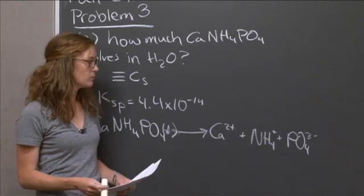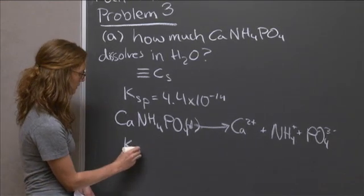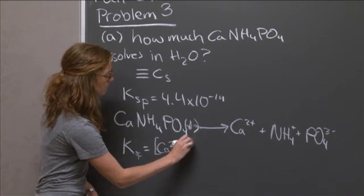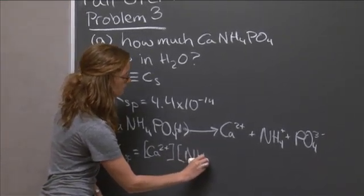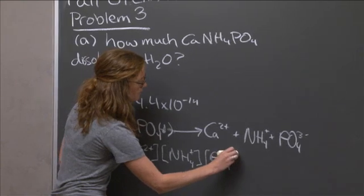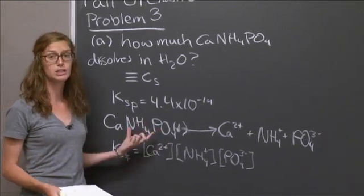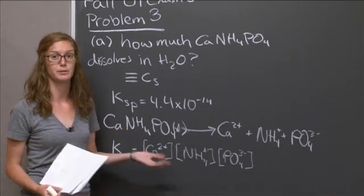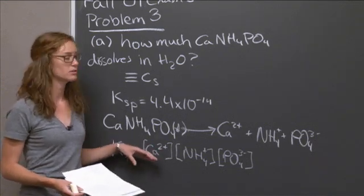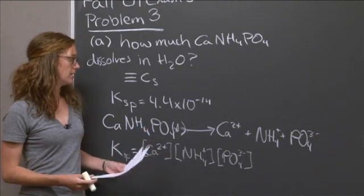As with every equilibrium constant, we can write down an equation relating to the concentration of the species. So our Ksp is the product of the concentrations. And a common mistake made on this problem was that students included the calcium ammonium phosphate solid on the bottom, where you would normally put the reactants. However, remember that for equilibrium constants, we don't put solids in there because the concentration doesn't change.